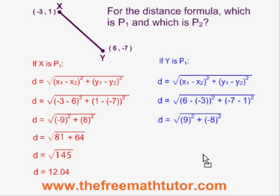When we simplify, we end up with 9 squared and negative 8 squared, which still gives us 81 plus 64. We have the square root of 145 is our distance and it is still equal to 12.04.